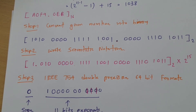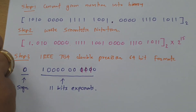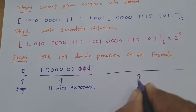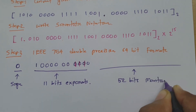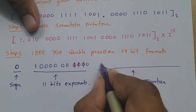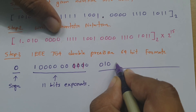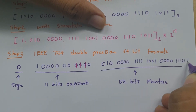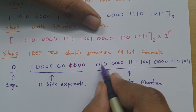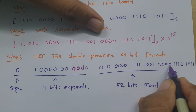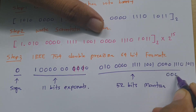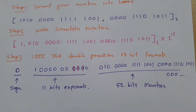Next is the 52-bit mantissa. As per the scientific notation, the mantissa is the fractional part after the leading 1. So we write: 010, then 4 zeros, then 4 ones, then 1001, then 4 zeros, then 1110 1011. That gives 27 bits, so we need another 25 zeros of padding to reach 52 bits.